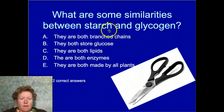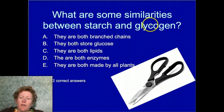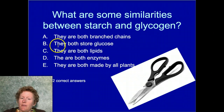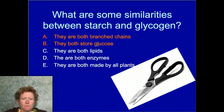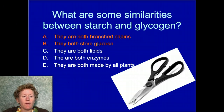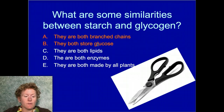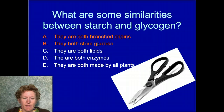There are similarities between starch, which is how plants store glucose, and glycogen, which is how animals store glucose. They both have branched chains, they both store glucose, and they're both bunches of glucose molecules stuck together.